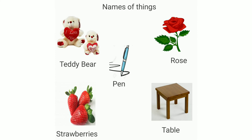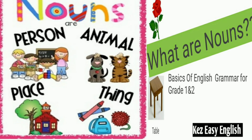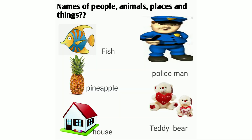If you have understood this, you will be able to do this exercise on nouns. Look at these pictures and say what they are. Fish is the name of an animal. Pineapple is the name of a fruit. House is the name of a place. Policeman is the name of a person. Teddy bear is the name of a thing. So what are all these? These are nouns, or naming words.